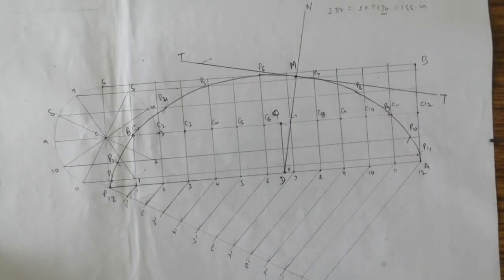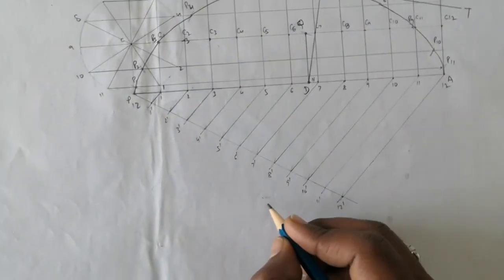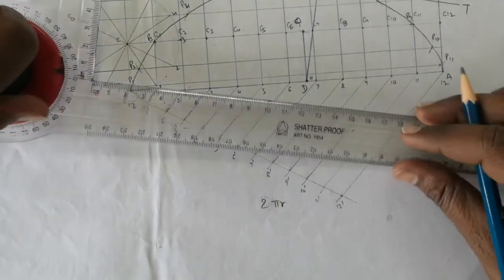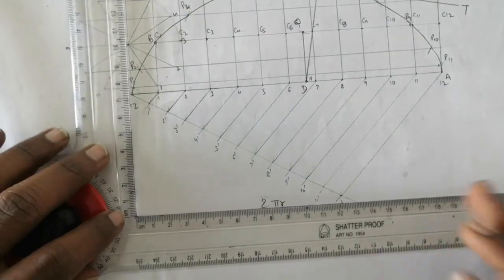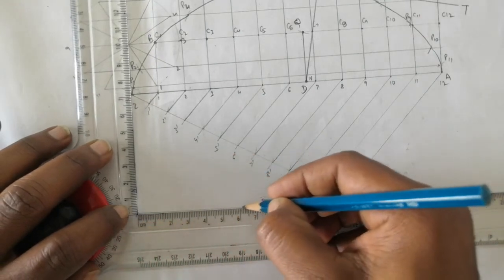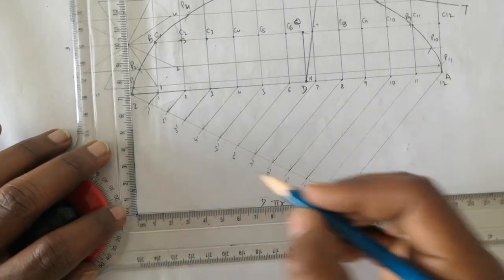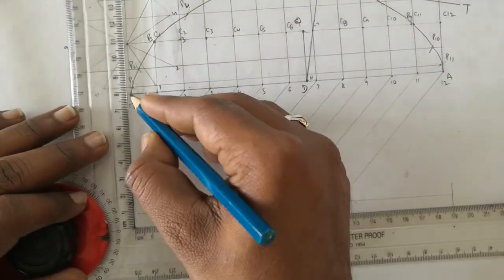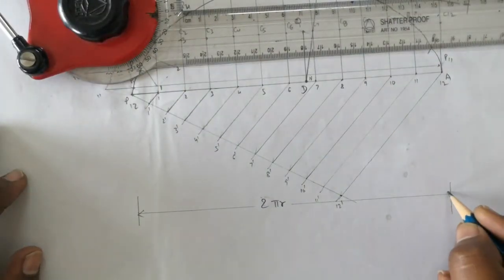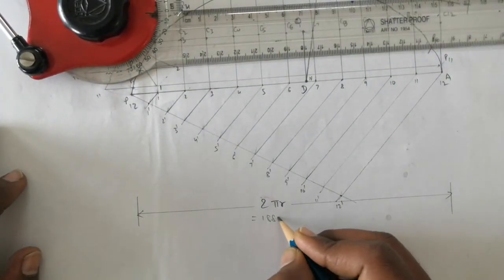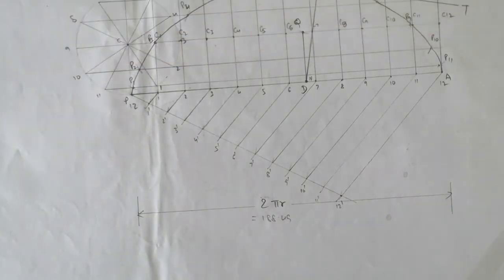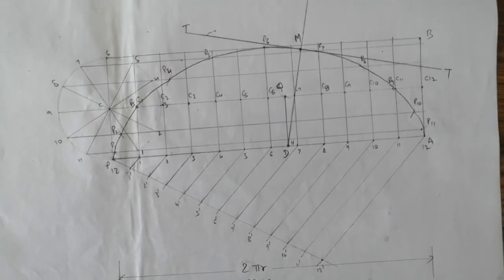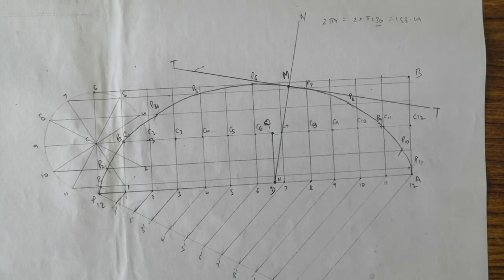Note that the length of PA equals 2πr = 188.49 mm, or approximately 188.5 mm. This completes the construction of the cycloid along with its tangent and normal.